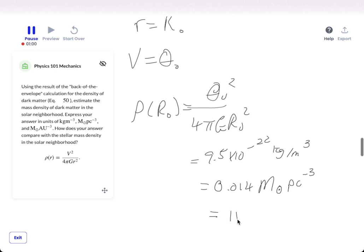And that also equals 1.6 times 10 to the negative 18th, mass of the sun, au negative 3.